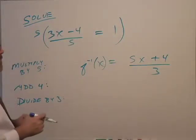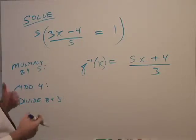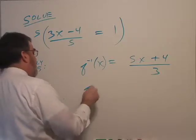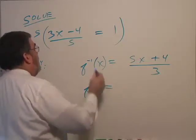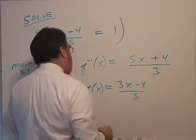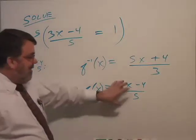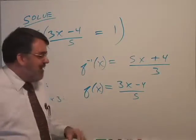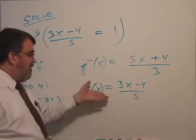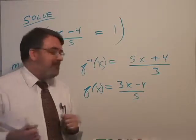So there's my inverse function. Now what is that an inverse function of? Well, f of x is 3x minus 4 over 5. So I claim that these functions are inverses. In other words, if you did a composite function one with the other, everything is going to cancel out and give you x.